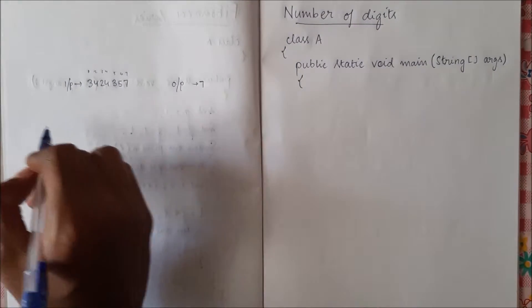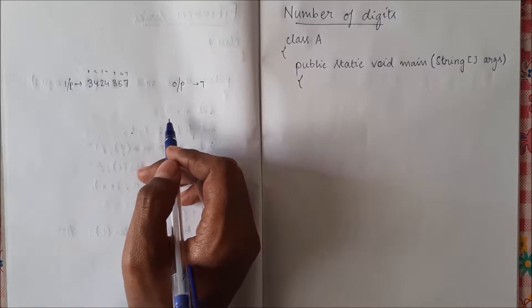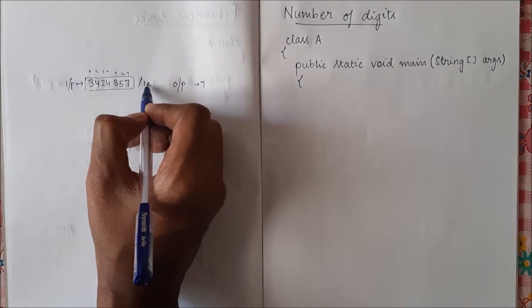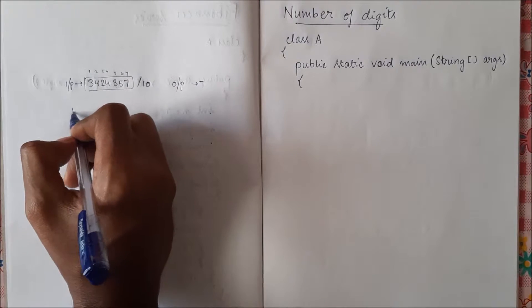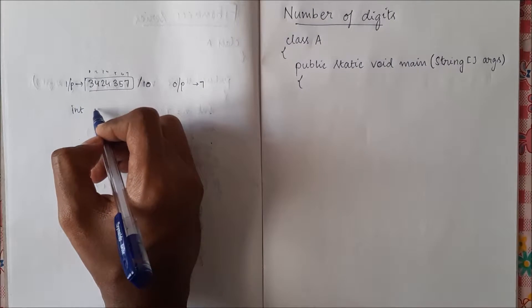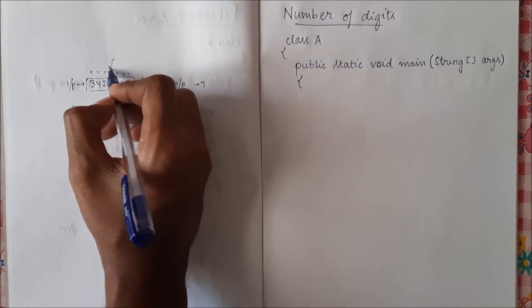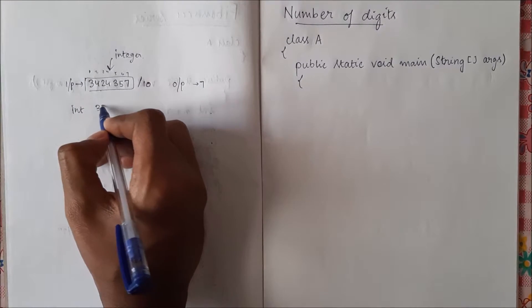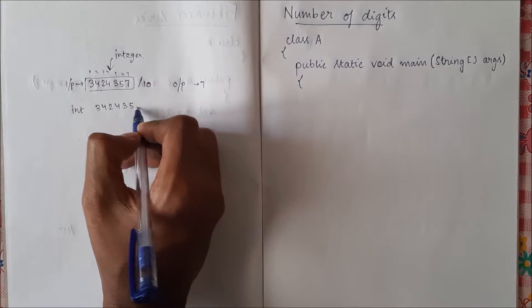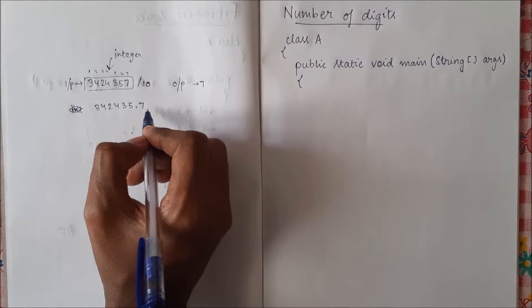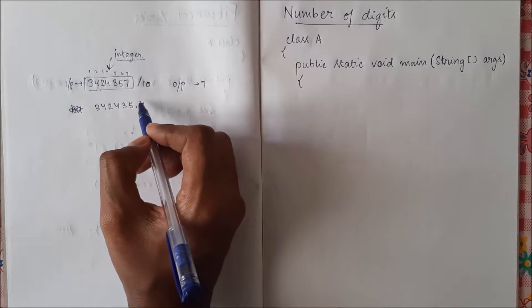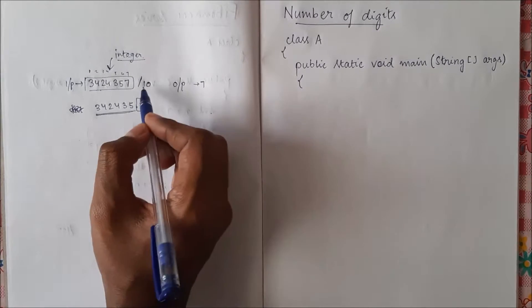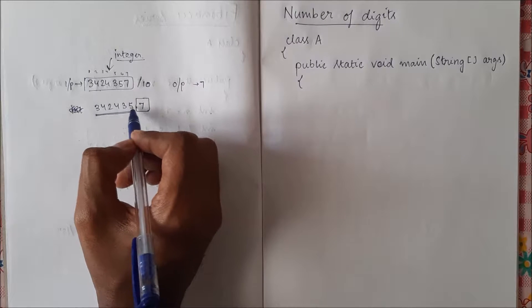So how do we count the number of digits? A simple logic is we will divide the given number by 10. If we divide once by 10, since it is an integer number, if we divide it by 10 we will get this is the actual value, but since it is an integer it will not consider this decimal part.